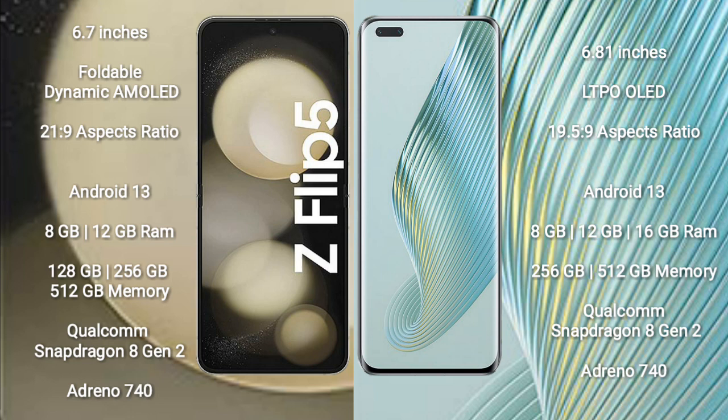Samsung Galaxy Z Flip 5 comes with 8GB or 12GB RAM and 128GB, 256GB, or 512GB internal storage, with a Qualcomm Snapdragon 8 Gen 2 processor and Adreno 740 GPU. Honor Magic 5 Pro comes with 8GB, 12GB, or 16GB RAM and 256GB or 512GB internal storage, also with a Qualcomm Snapdragon 8 Gen 2 processor and Adreno 740 GPU.